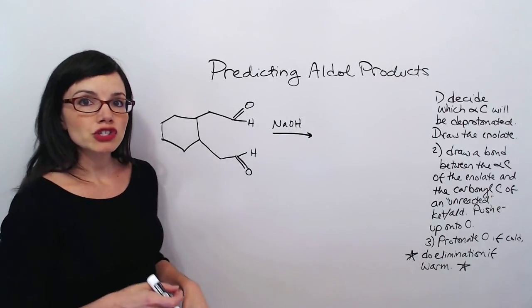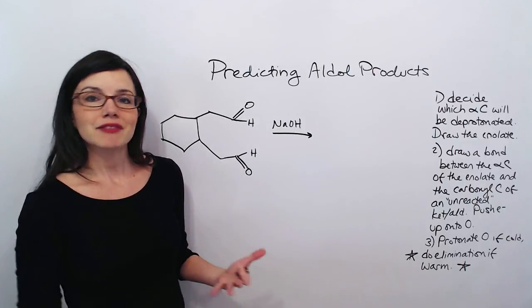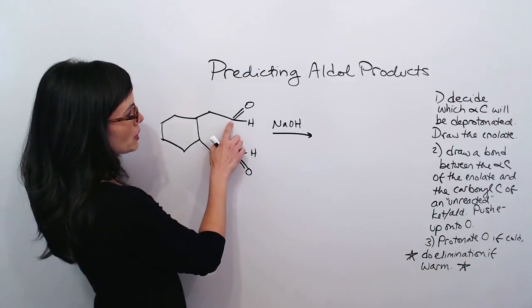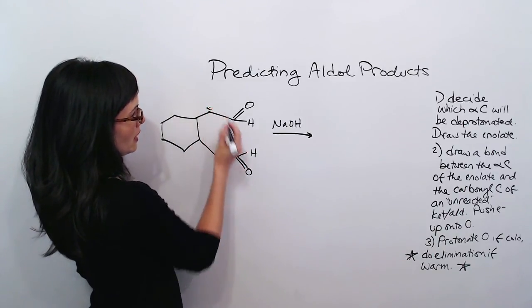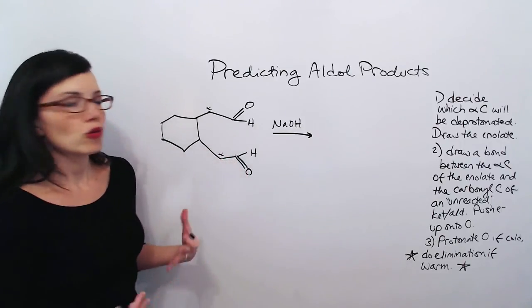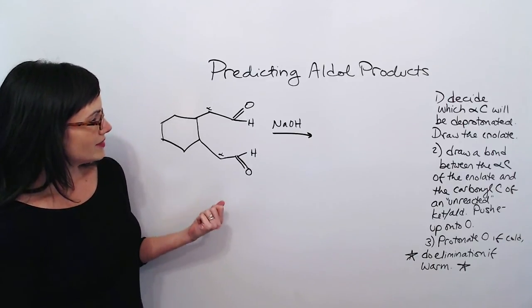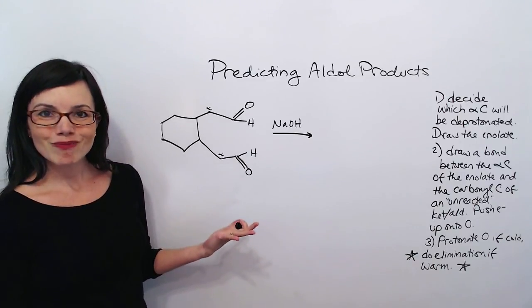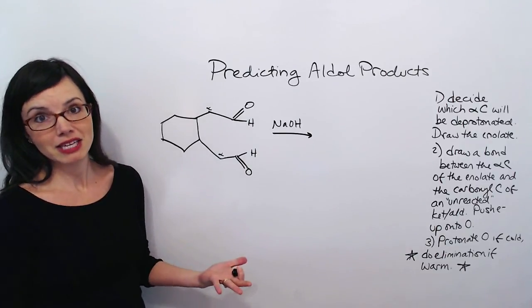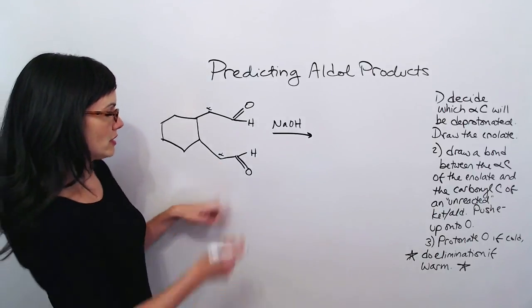Our first job is to decide which alpha carbon is going to be deprotonated. We just have two alpha carbons that we have to identify. There's one right here, and there's one right here. So we need to think about which one is a better alpha carbon. But they're both identical. So it really doesn't matter which one becomes the alpha carbon that's going to be the enolate. We just randomly pick one. I'll just pick this one.